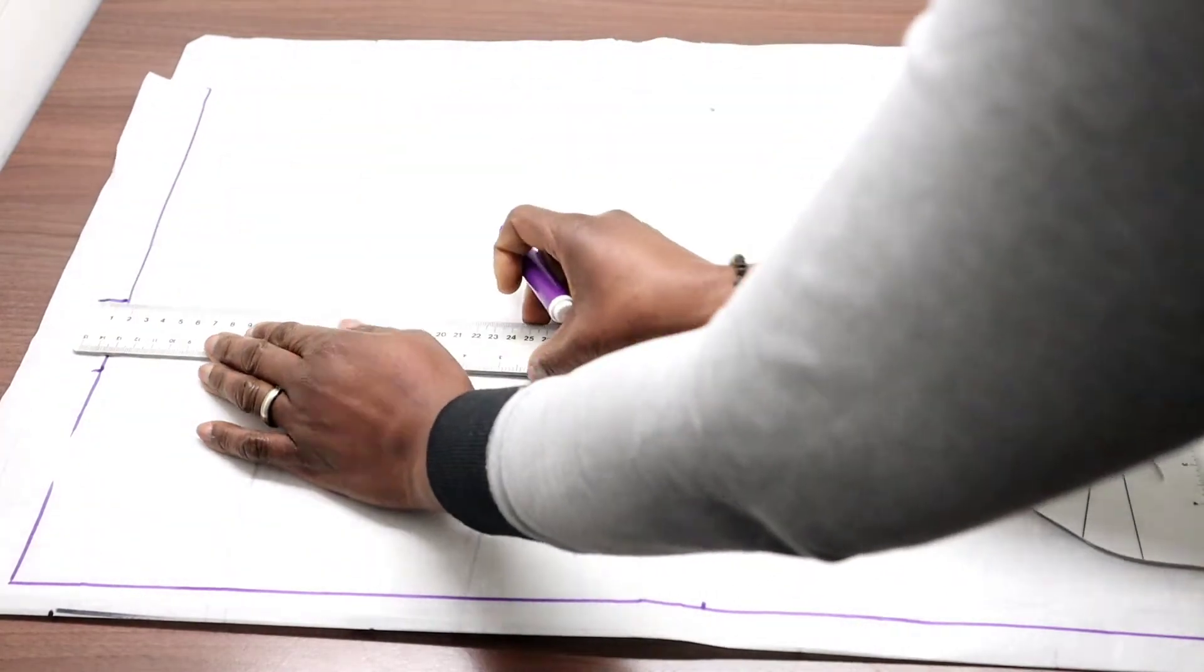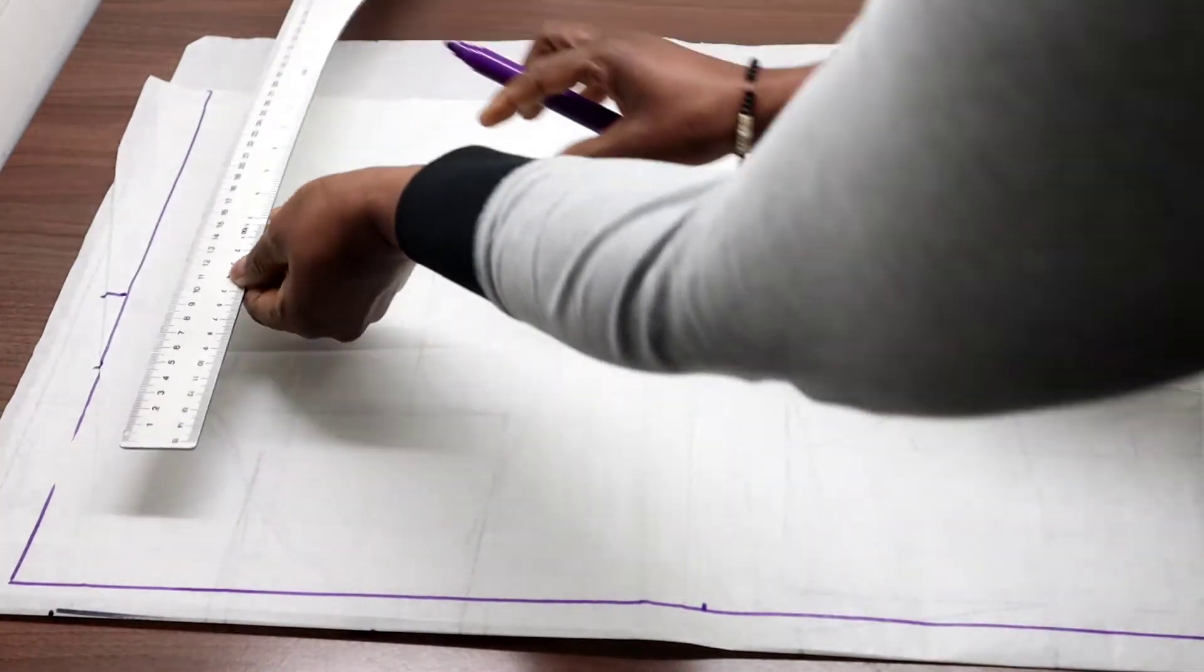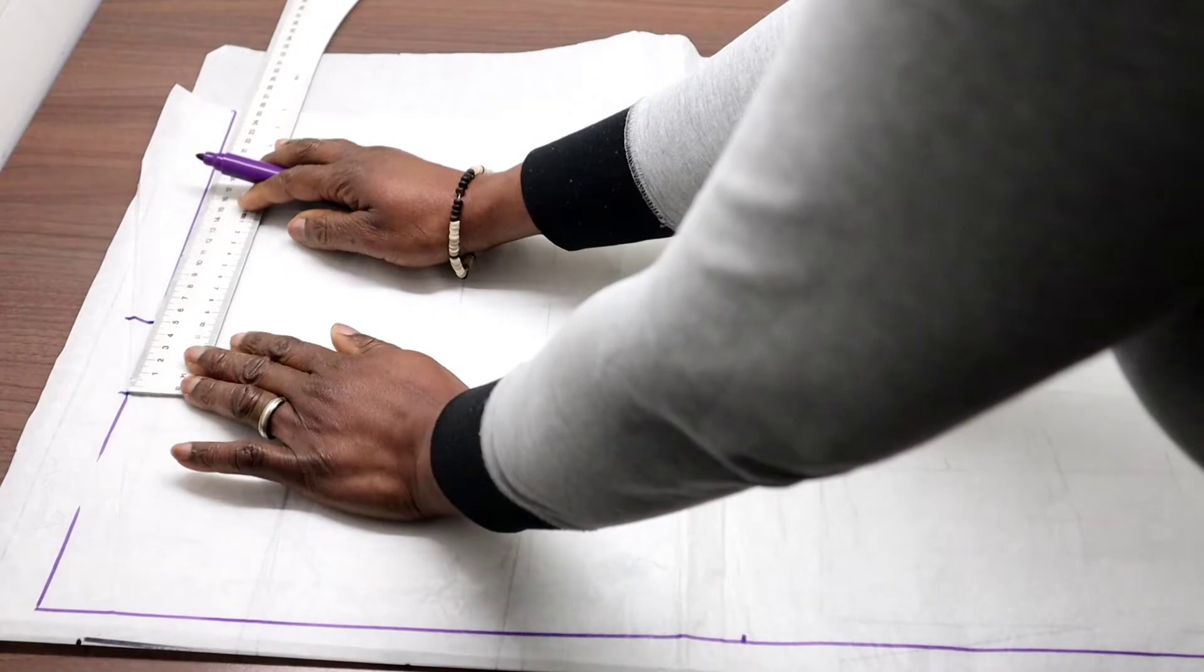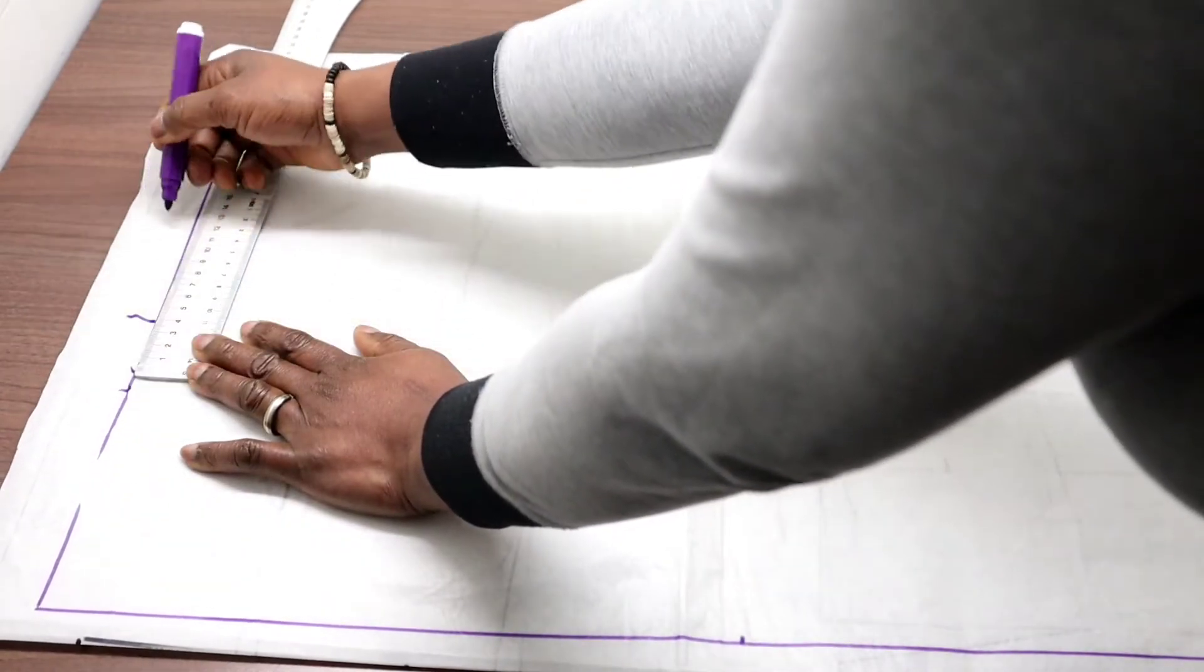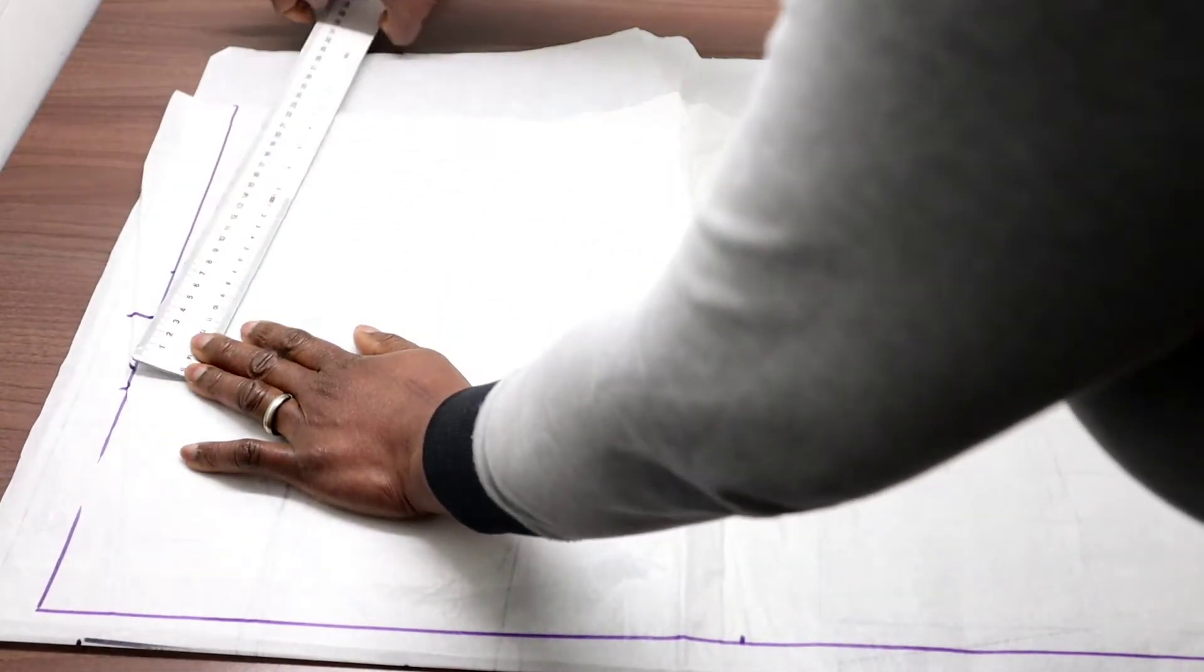In between, we draw. We make a point of 4 cm. Here 4 cm. There 4 cm.